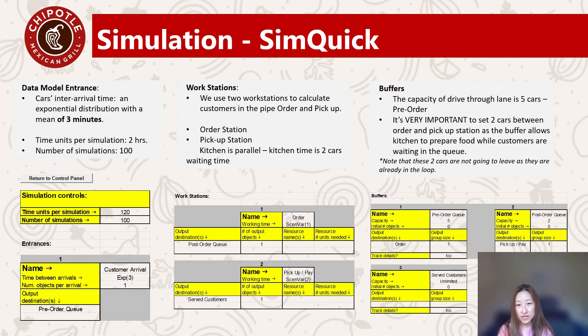We also set buffers. The capacity of the drive-thru length is 5 cars and we set it as a pre-order buffer. The second buffer is very important — we set two cars between the order and the pickup station to allow the kitchen to prepare the food.